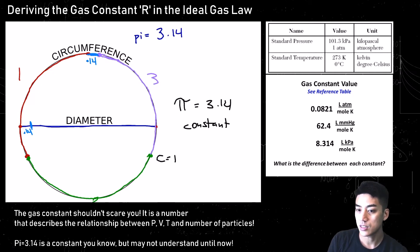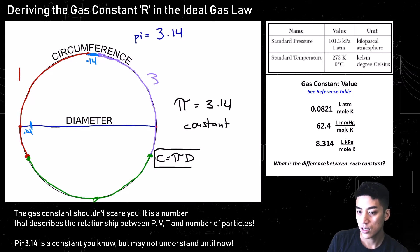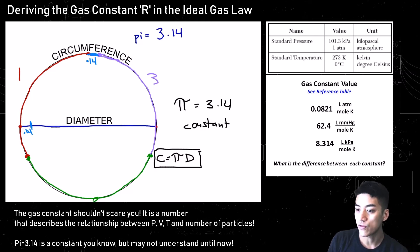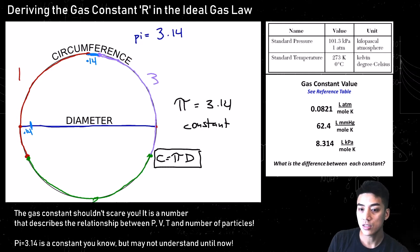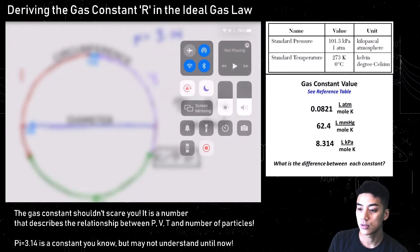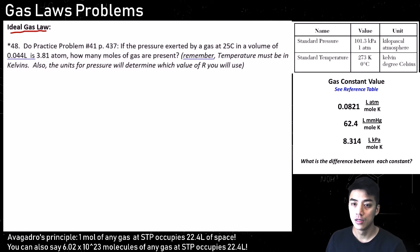So like pi, the gas constant — whether you're using the number for atmospheres, millimeters of mercury, or kPa — it just describes the relationship between pressure, volume, temperature, and the number of particles. Let's do the ideal gas law.